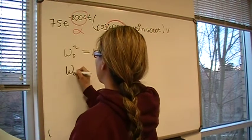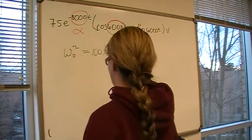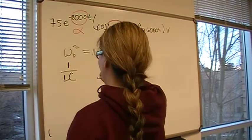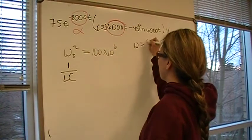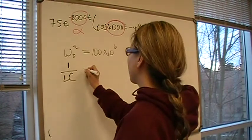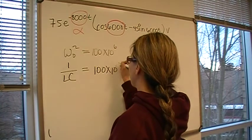Don't take the square root of that because omega 0 squared is 1 over LC, since omega 0 is 1 over root LC. Let's just leave it in that form. That gives us 1 over LC equals 100 times 10 to the 6th.